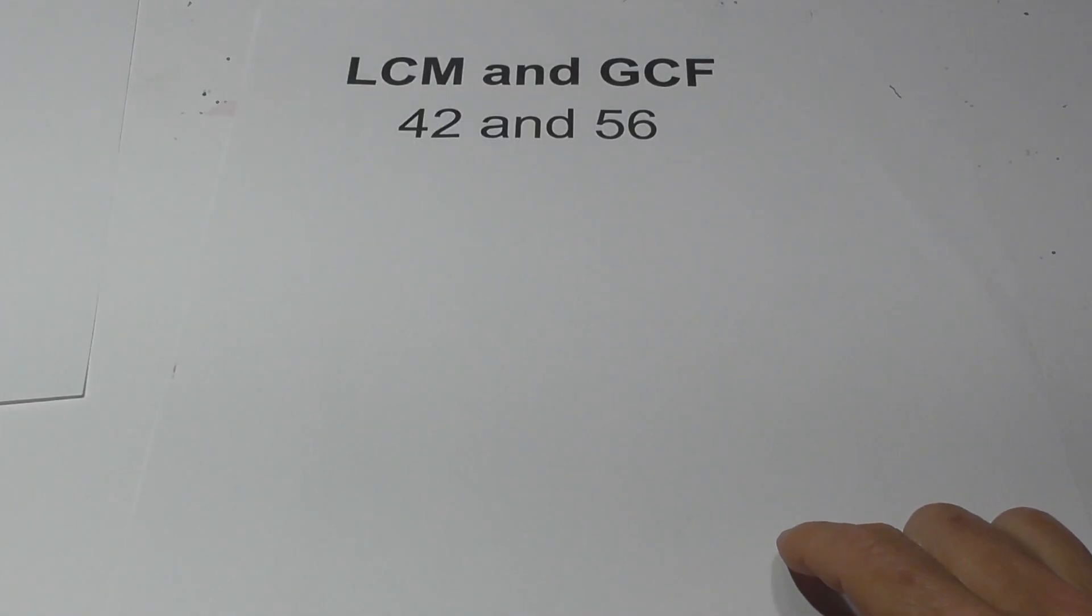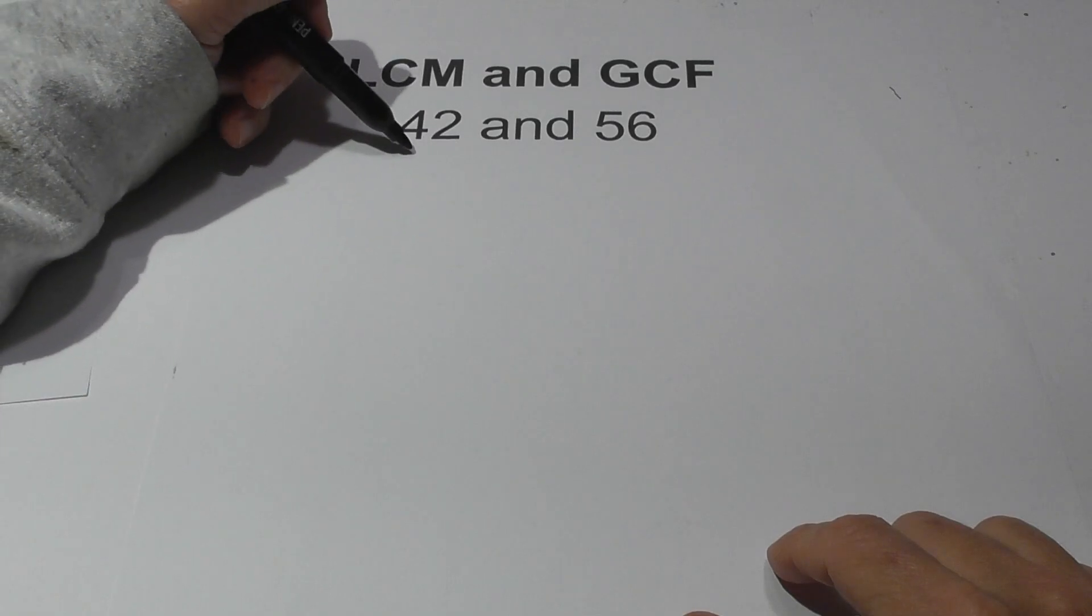Welcome to Moo Moo Math and Science and the LCM and GCF, Lowest Common Multiple and Greatest Common Factor, of the numbers 42 and 56. I like to use a factor tree, so let's get started.